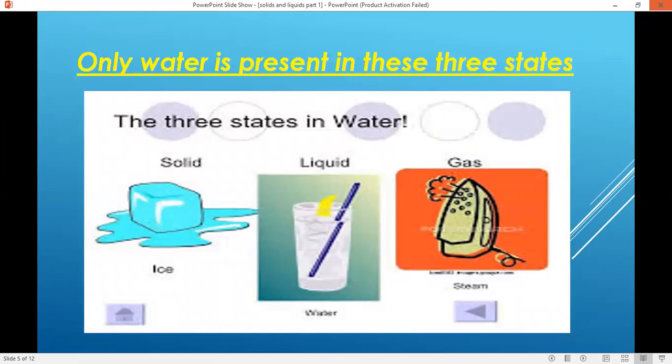Only water is the material that is present in all these three states. Usually water is present in the form of liquid naturally, but when we put that liquid in freezer it becomes solid and that solid is known as ice. And when we heat liquid water, steam is coming out of that water liquid, and that steam is actually the gaseous form of liquid.